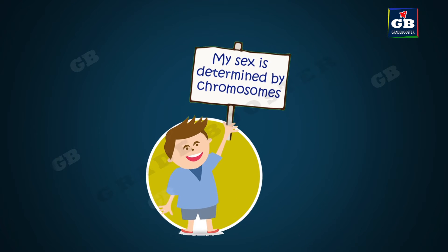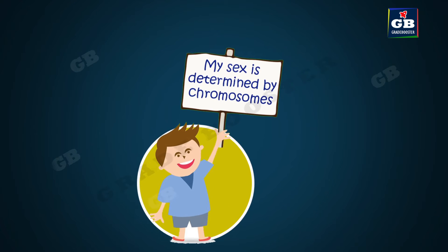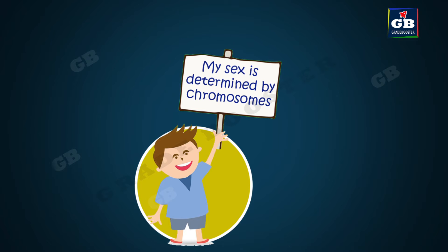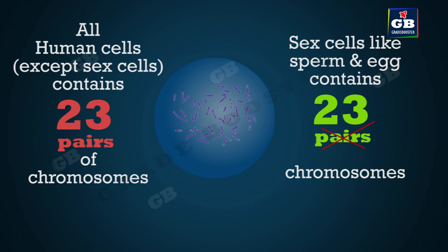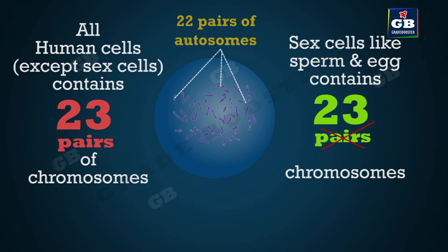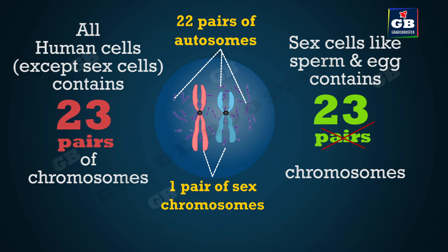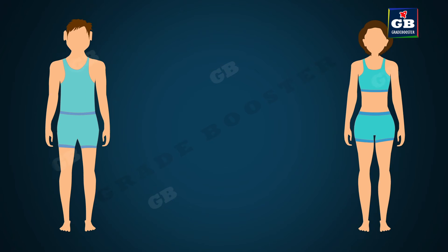But in human beings, the sex of the individual is largely genetically determined. It means the genes inherited from parents decide whether the newborn will be a boy or a girl. Each human cell contains 23 pairs of chromosomes. Out of these 23 pairs, 22 pairs are autosomes and one pair is sex chromosomes.